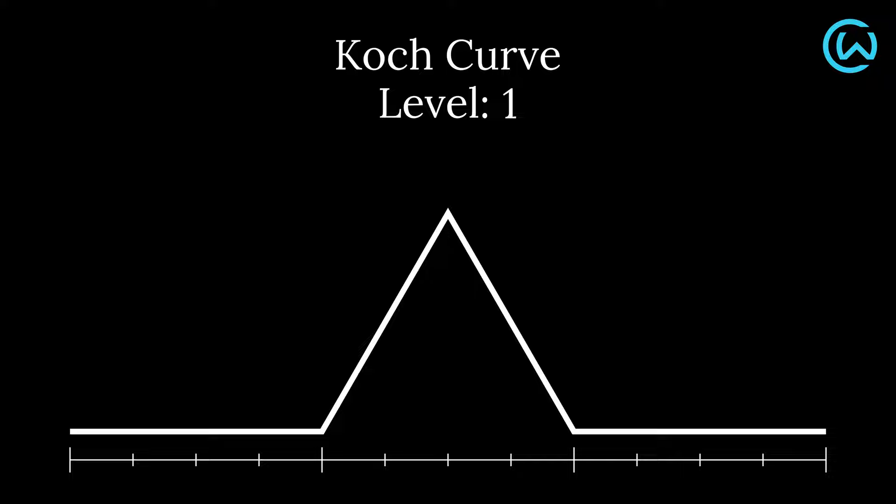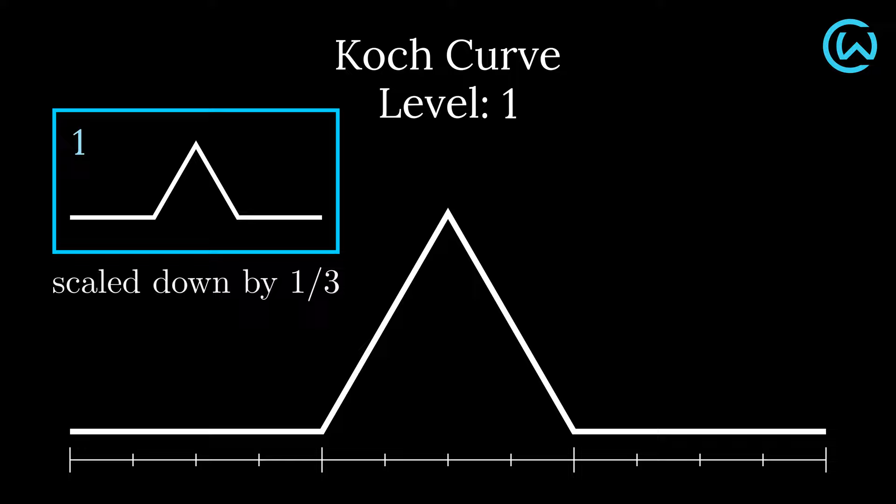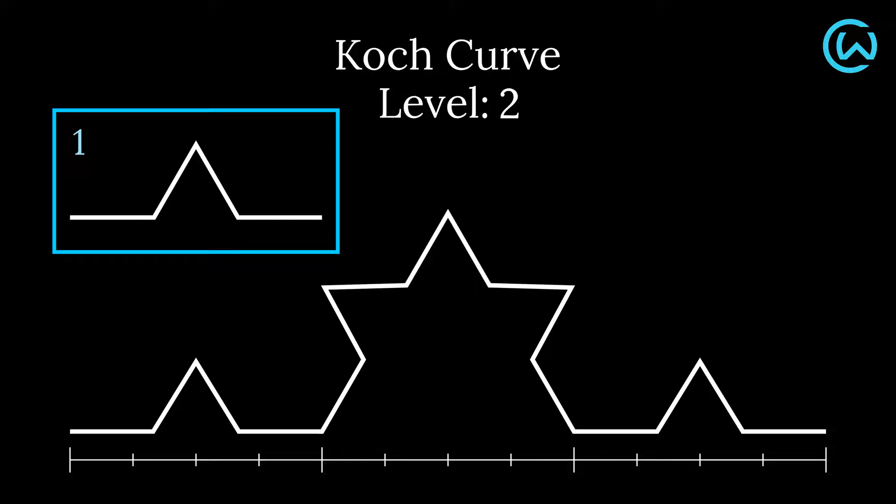Let's now take a closer look to find the self-similarity in the Koch curve across different levels of complexity. At each level, the Koch curve consists of four non-overlapping copies of the previous level scaled down by one-third.